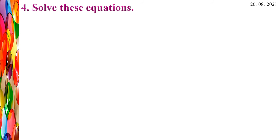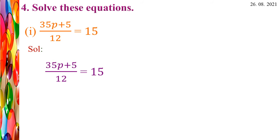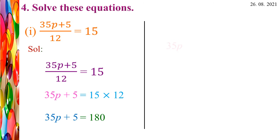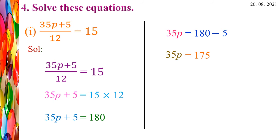Let's see Fourth Roman: Solve these equations. First: (35p + 5)/12 = 15. Let us find the solution. Take the equation (35p + 5)/12 = 15. We are going to do cross multiplication: 35p + 5 = 15 × 12. 15 × 12 = 180. So we get 35p + 5 = 180. Transposing +5 to the RHS, it becomes -5. So 35p = 180 - 5 = 175.